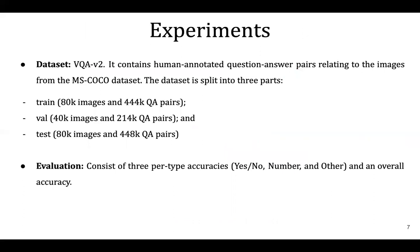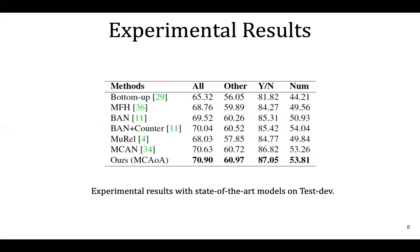The dataset is split into train, test and validation sets. Additionally, there are two test subsets called test div and test standard to evaluate model performance online. The results consist of three part-type accuracies: yes/no, number and others, and an overall accuracy.